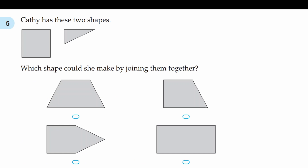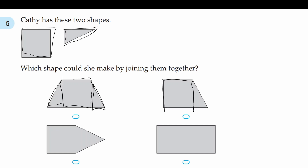Question five: Kathy has these two shapes — a square and a triangle. Which shape could she make by joining them together? Let's see what the other shapes are made of. This trapezium is made of a triangle, a square and another triangle. This quadrilateral is made of a square and a triangle. This pentagon is made of a square and a triangle. And this rectangle is made of a rectangle.